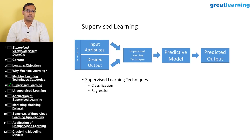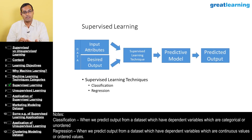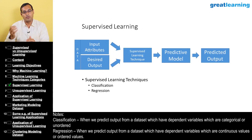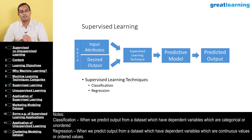There are two main classifications of supervised learning techniques: classification and regression. Classification is used when we are trying to predict an output that falls into a class — for example, predicting whether a credit card transaction is fraudulent or not fraudulent. That is a classification problem.